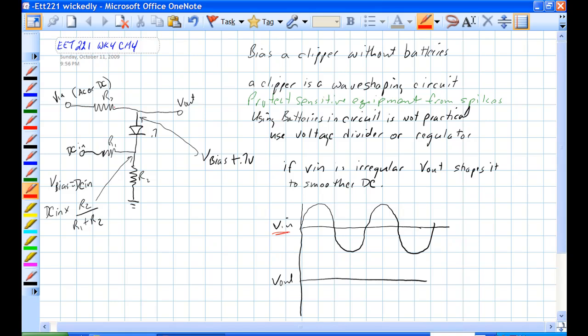We have RS and a V out. Here we have a DC voltage in for a DC. We'll use it to replace that source that we had in the last circuit because using batteries in a circuit are not practical. We use a voltage divider instead or a regulator.